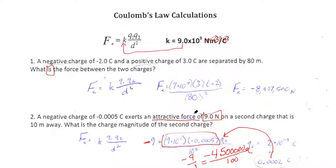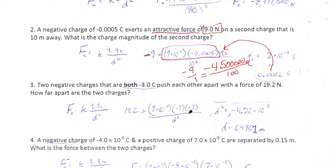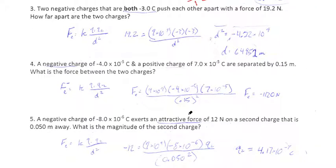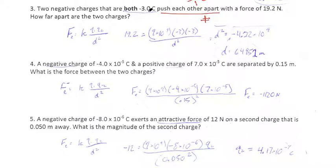Alright, let's take a look at number 3. Very similar in terms of what we're doing — still using Coulomb's Law formula. I've got two negative charges, both negative 3 Coulombs, and they push each other apart with a force of 19.2. Since they push each other apart, we know this is going to be a positive force — remember, negative force means attraction, positive force means repulsion. They're both negative and likes repel. So our force is positive 19.2, and I'm solving for D — how far apart are the two charges. I go ahead and multiply all that out: 9 times 10 to the 9th times negative 3 times negative 3, or you could leave it as negative 3 squared.